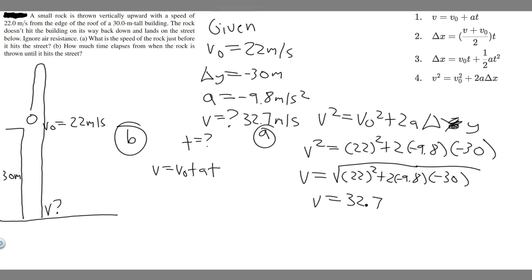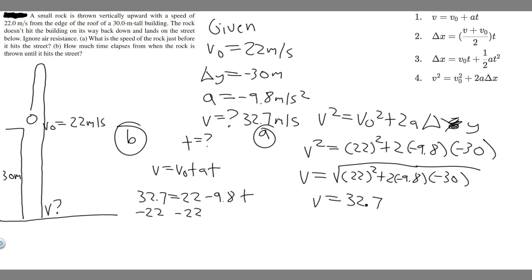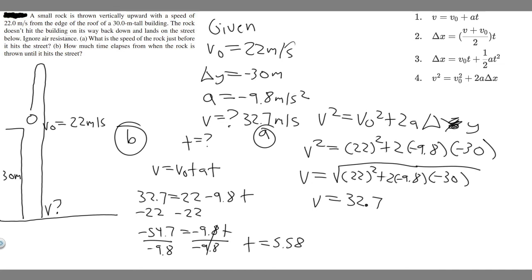Plugging in: 32.7 equals v₀ which is 22, plus a which is minus 9.8, times t. Subtracting 22 from both sides gives minus 54.7 equals minus 9.8t. Dividing both sides by minus 9.8 gives t equals 5.58 seconds, rounded to the hundredth place. So 5.58 seconds is your answer to Part B. Hopefully you found this video useful.